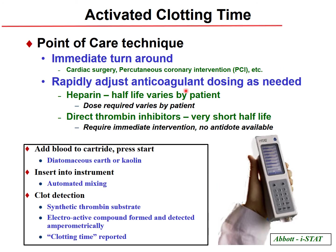Another point-of-care technique is the activated clotting time (ACT) measurement, which gives immediately available results. It is used in surgical wards during cardiac surgery, PCI, or other surgical interventions to assess the patient's coagulation system and to adjust anticoagulant doses, for example heparin or thrombin inhibitor therapy.